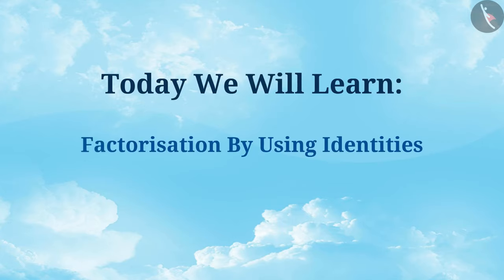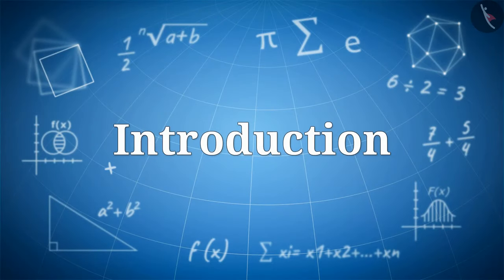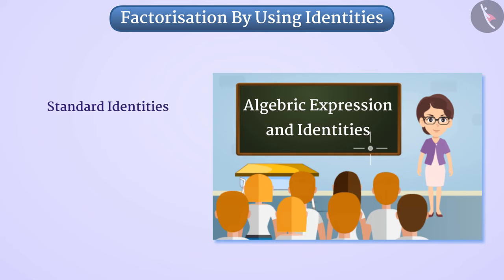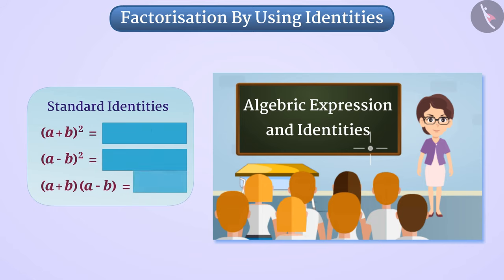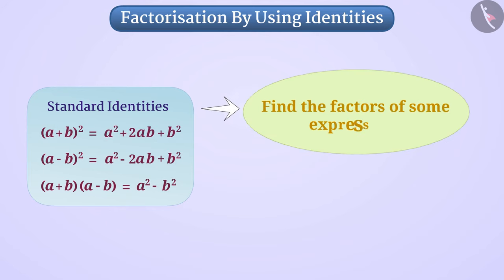Today, we will learn factorization by using identities. While learning about algebraic expressions and identities, we have discussed some standard identities. Here, the left side of standard identities is shown. Will you be able to tell their right side? Try it. Do you know that with the help of these identities, we can also find the factors of some expressions?